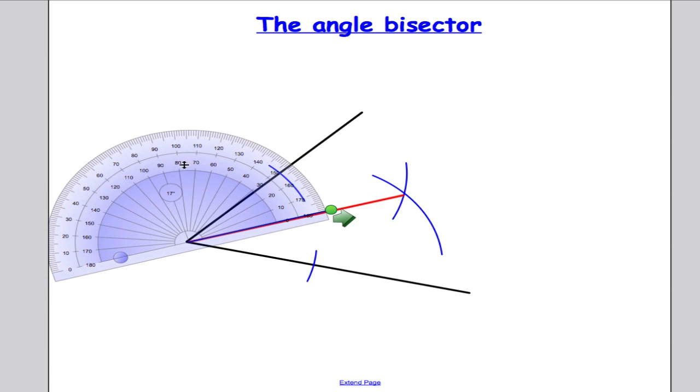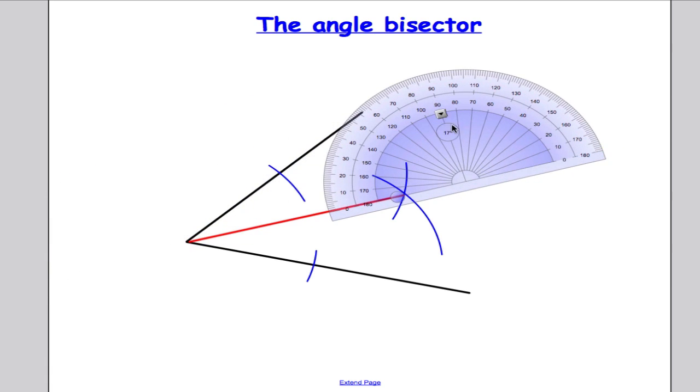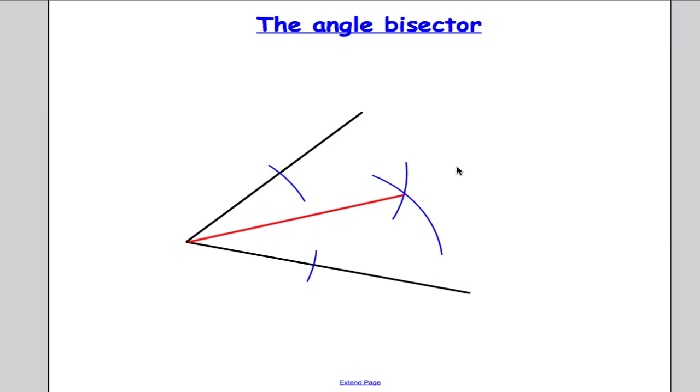So the angle has been bisected. And that's all there is to it. You'll find that these two angles are identical. They were both 29 degrees each. And that's how we bisect an angle. Thanks for watching and I'll see you again sometime.